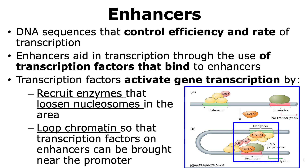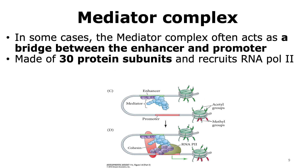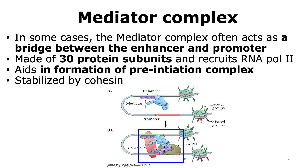The interaction between enhancer-bound and promoter-bound transcription factors is necessary for transcription to happen. In some cases, a group of proteins called the mediator complex acts as a bridge between the enhancer and the promoter. The mediator complex is made up of 30 protein subunits and plays a role in recruiting RNA polymerase 2. The mediator aids in the formation of a pre-initiation complex, where it binds to the basal transcription factors at the promoter.